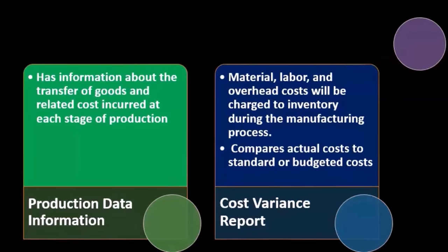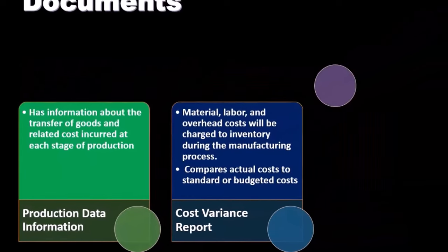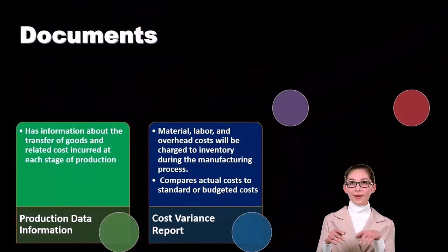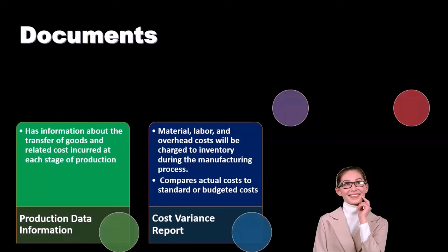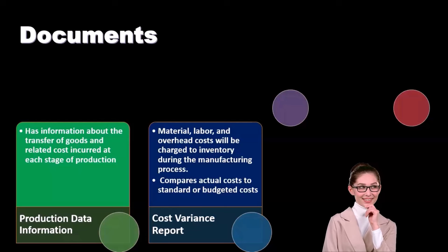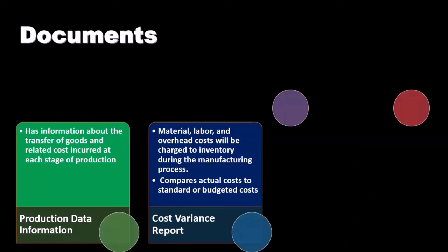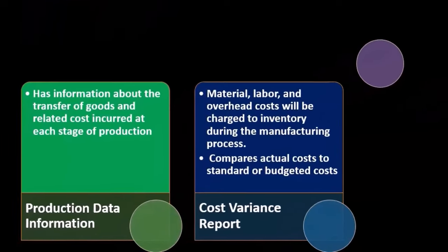The cost variance report covers material, labor, and overhead costs charged to inventory during the manufacturing process. When making inventory, those three components — material, labor, and overhead — must be considered. The variance report compares actual costs to the standard or budgeted costs. We budget the production process using standard costs, and the variance report shows the difference between what was budgeted for these components and what actually happened.